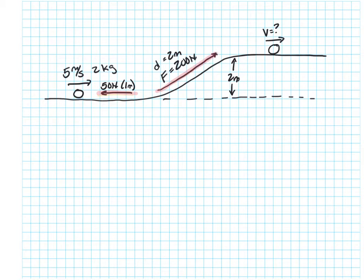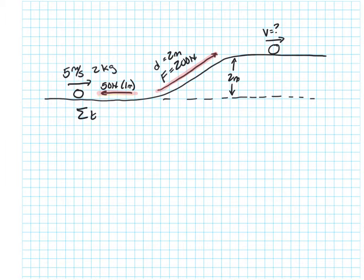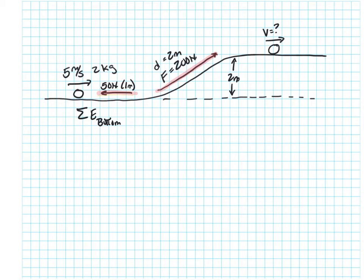The second force is going to add energy to the ball, because it's going with the motion of the ball — so it's going to add energy compared to the beginning. Previously what I would do is say some of the energy at the beginning — let's call it the bottom — equals the energy at the top. But now I've got these outside forces: whatever this 50 Newtons is that acts for 1 meter, and whatever the 200 Newton force is that acts for 2 meters.